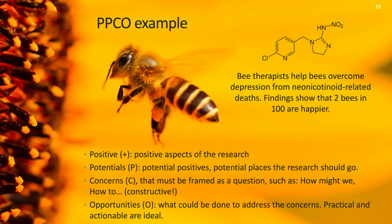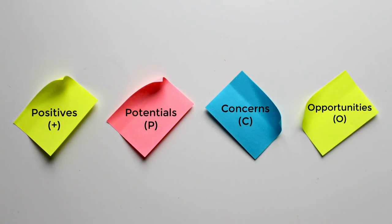Now if we were doing this in writing or in person, we might be writing these on sticky notes, and we want to put one idea per sticky note. Positives on one sticky note, potentials on a different sticky note, concerns on a third, opportunities on a fourth. That way, when all the feedback came in, these researchers would be able to organize all the positives together, potentials together, concerns and opportunities together.